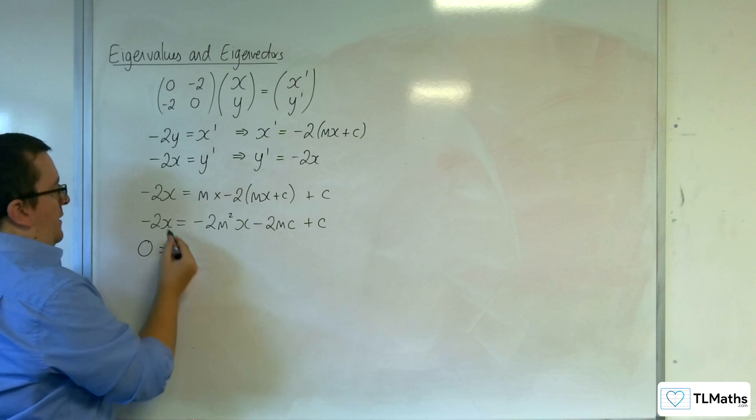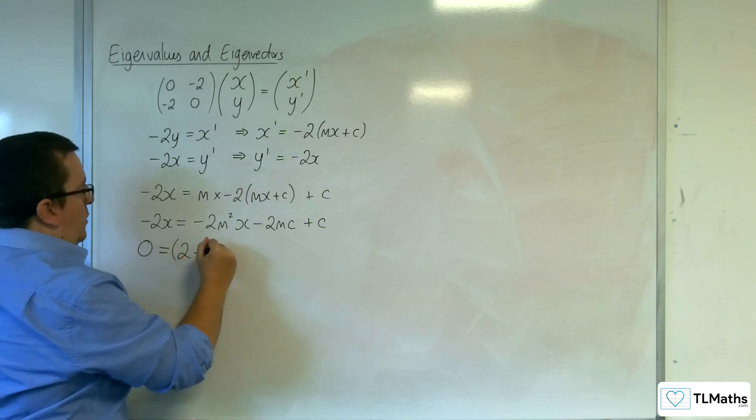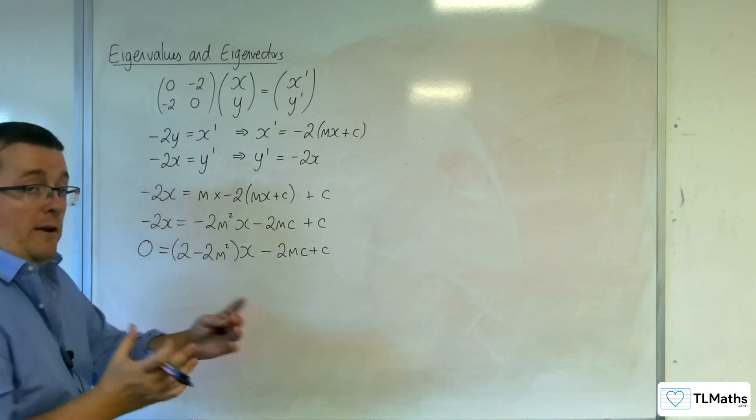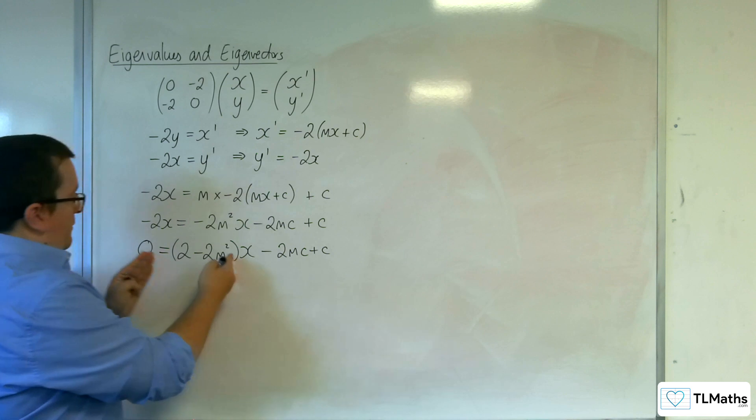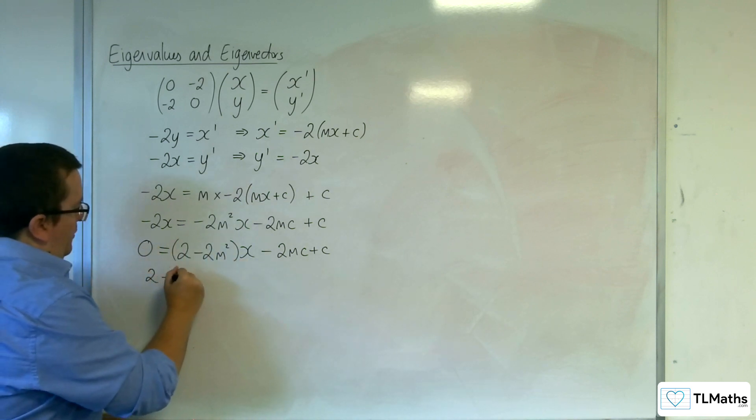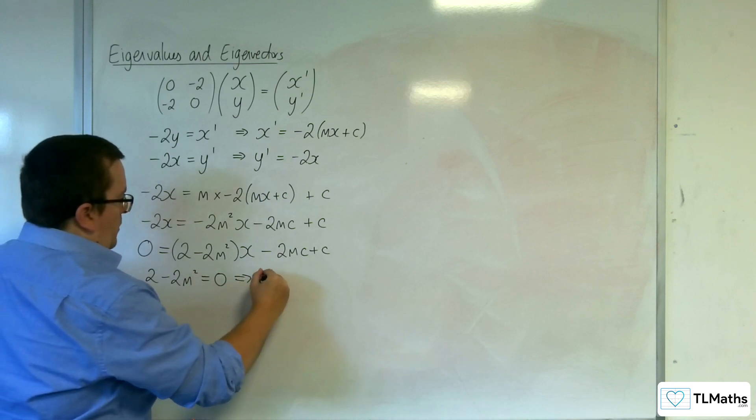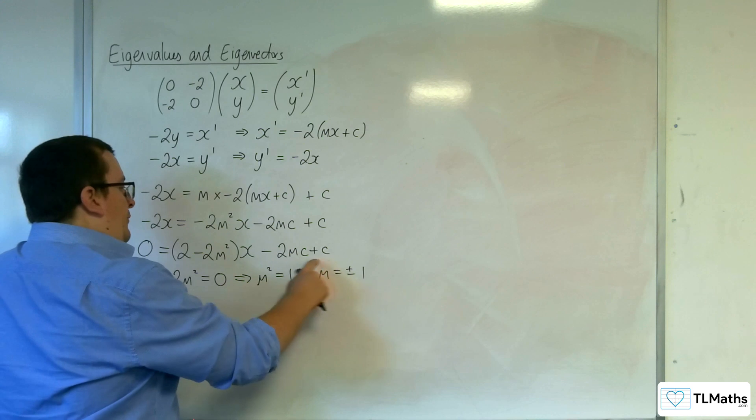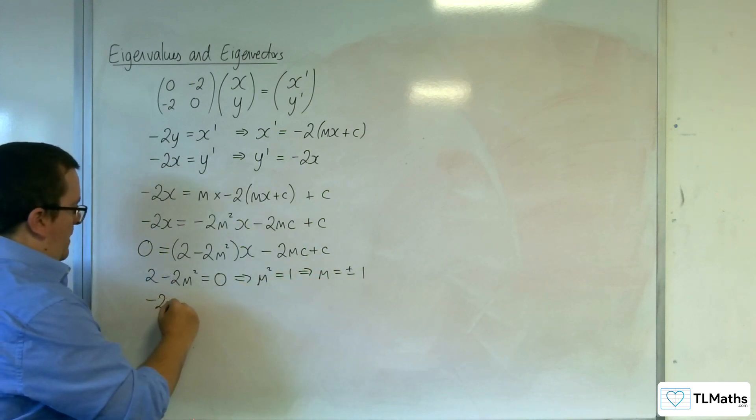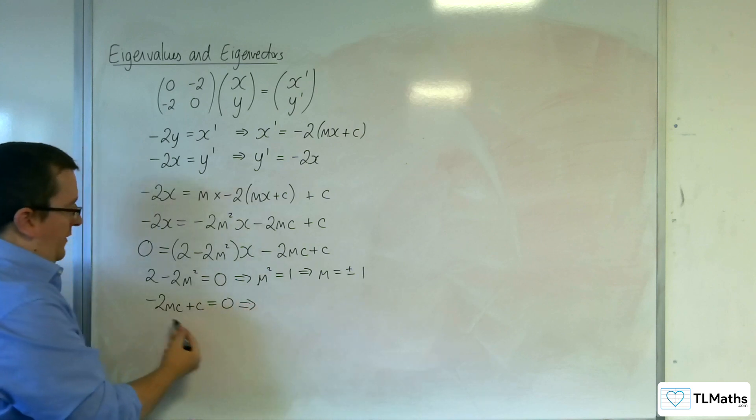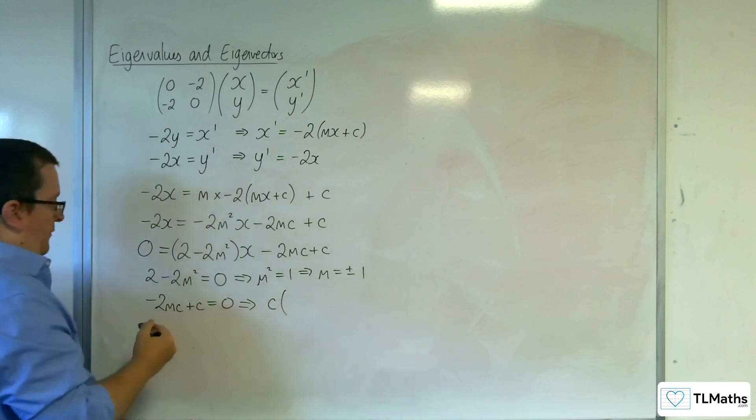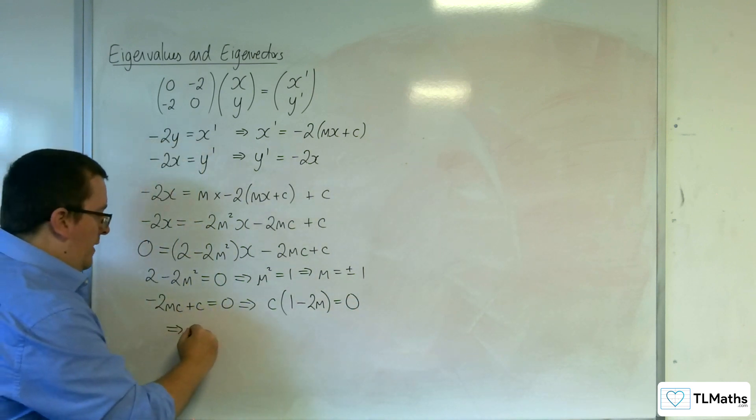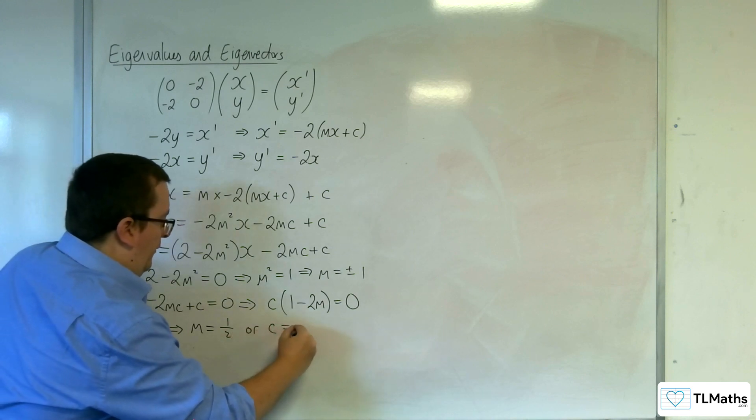Now, if y prime is equal to mx prime plus c, I can say that minus 2x must be equal to m times x prime plus c. So minus 2x is equal to, so multiplying this out, we get minus 2m squared x, and then we've got minus 2mc plus c. If I move everything on to the right-hand side and factor out the x, I'll have 2 take away 2m squared x, and I've got the take away 2mc plus c there. So, comparing coefficients then, what's in front of the x here has to be whatever's in front of the x here, which is 0, of course. So we must have 2 take away 2m squared being equal to 0. So m squared must be 1, and so we'll be looking at m is plus or minus 1.